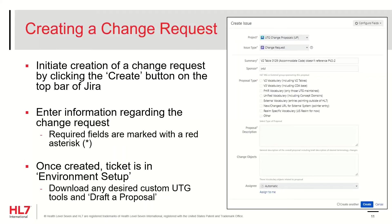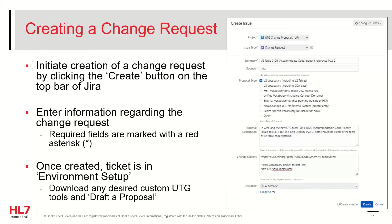Then select all applicable proposal type checkboxes for the HL7 content categories that will be affected by the proposed changes to the code systems and/or value sets. In the Proposal Description field, comprehensively describe the changes being requested by the proposal and why they are needed — people will use this to understand why you are proposing the change. The Change Objects field identifies which artifacts are being modified as part of your proposal.